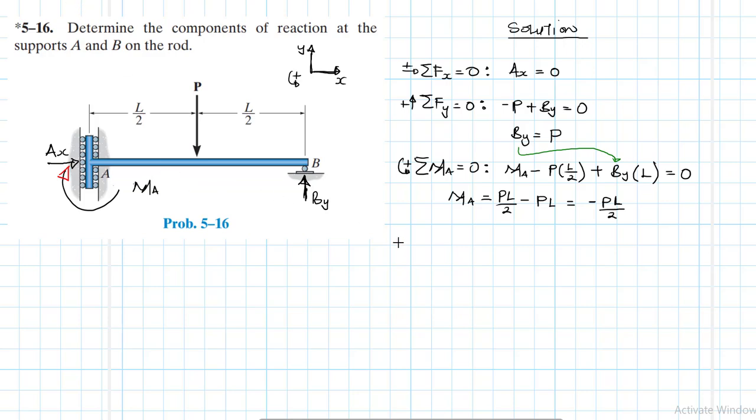So MA, if we are to write this, we have Ax equal to zero. We have By going up like so. This is equal to P.